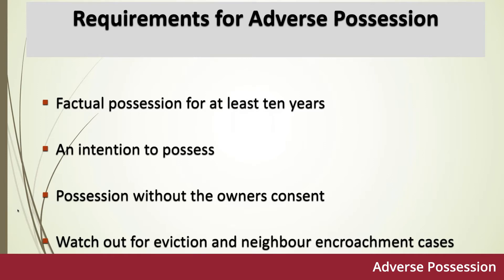The requirements for adverse possession include a number of significant points. Schedule 6, paragraph 1(1) of the Land Registration Act 2002 states that it is necessary for the adverse possessor to establish a period of at least 10 years of adverse possession. Interestingly, if the claim relates to Crown foreshore, that period is extended to 60 years, and the period ends on the date of application.